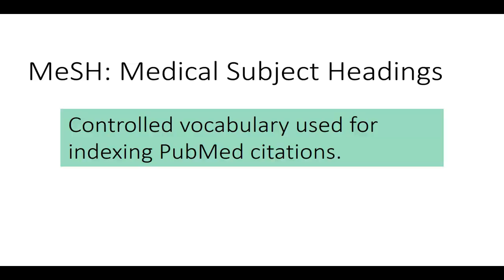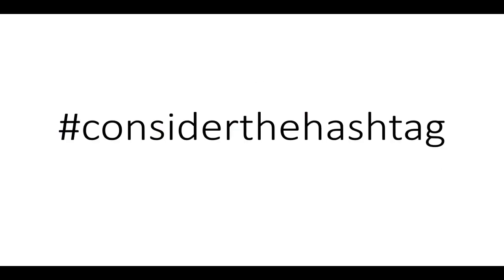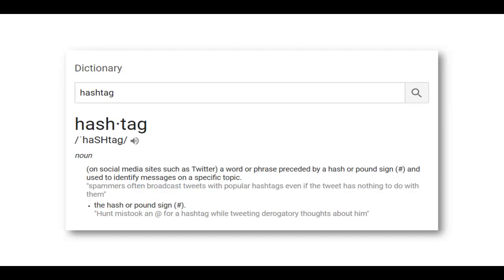MeSH stands for Medical Subject Headings, and it's a set of controlled vocabulary used for indexing PubMed citations. In order to explain how MeSH works, let's take a minute to consider the hashtag. Hashtags are used on social media websites, like Twitter and Instagram, to identify messages on a specific topic and to give context to a post.